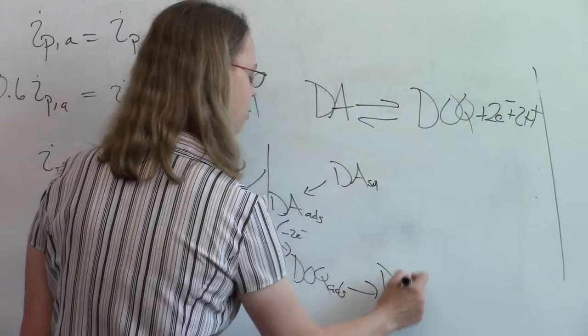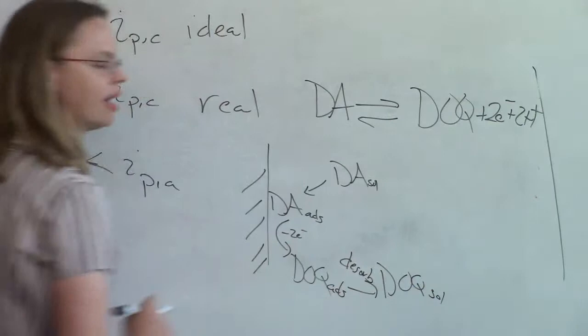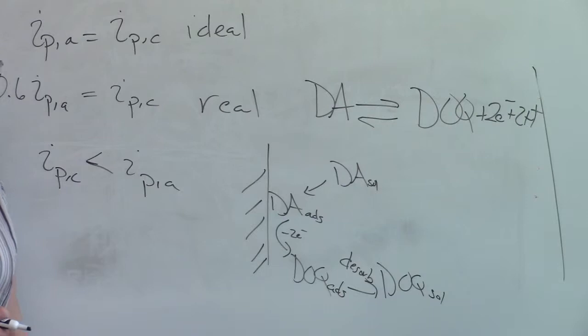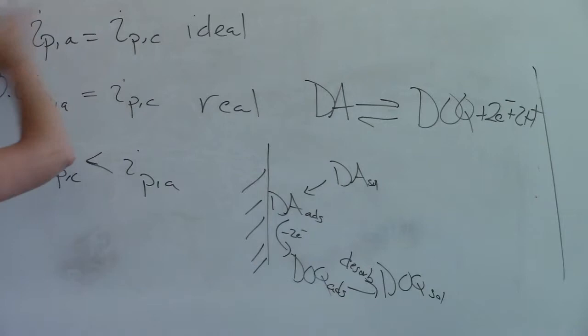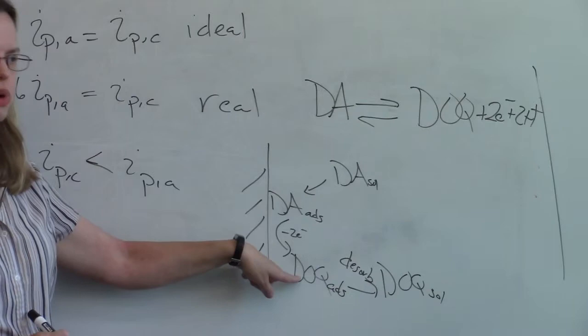But if this one can adsorb, so we had our dopamine in solution before, this one also can now desorb, that would be this process, and go back into solution. So it turns out that when you look at the kinetics of all of this, that dopamine itself adsorbs to the electrode, it sticks much stronger than dopamine orthoquinone.